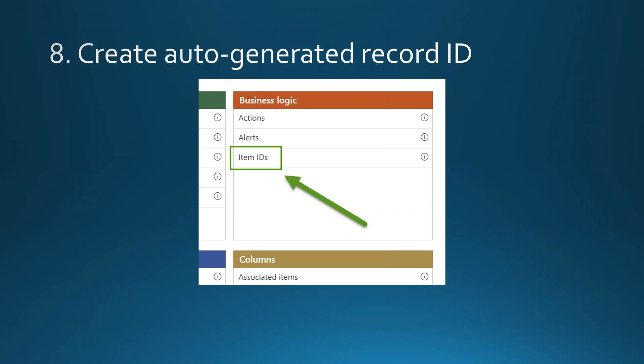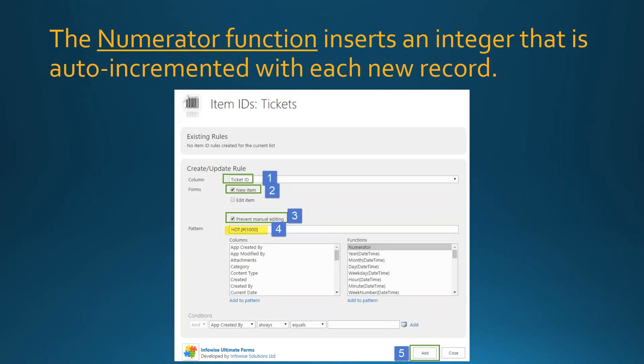Next, we create an auto-generated ID for our records. We don't want just the boring SharePoint ID, so in the settings you can set up a pattern that will auto-increment. For this help desk tool, the pattern is 'HDT.' followed by the hash symbol (the numerator function) with a pipe and 1000 — meaning ticket IDs start at 1000. The field is read-only; the system handles it entirely, preventing manual editing.